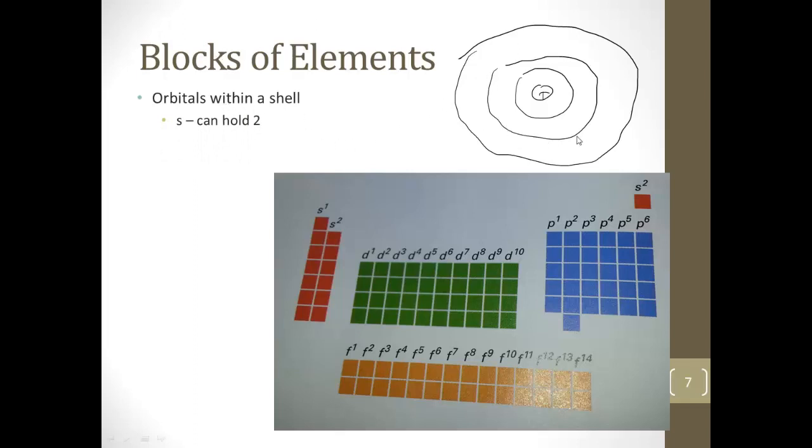Now we get into our second shell. That's going to have room for an S orbital, but it's also going to have room for what's called a P orbital. And the P orbital can hold up to six electrons. So if we look at our first shell, there's room for two because there's only S. If we look at our second shell, it can hold two in the S and then it can hold six in the P. P1, P2, P3, P4, P5, P6 for a total of eight electrons.